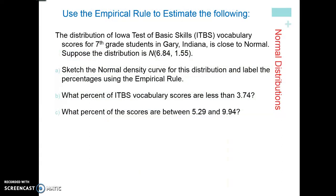If directions specifically state to use the empirical rule, then use it. If instructions say to find the area or estimate probabilities without specifying the empirical rule, do not use it unless explicitly stated. Anytime you use the empirical rule, always draw your normal curve with the mean in the middle, then label three standard deviations above and three standard deviations below — since 99.7% of the data falls within that range. Go ahead, pause the recording and try this.